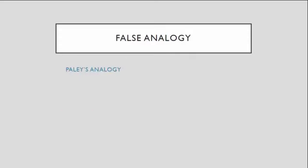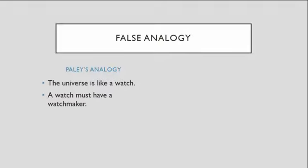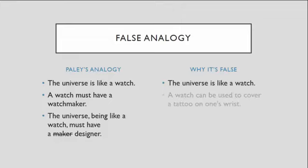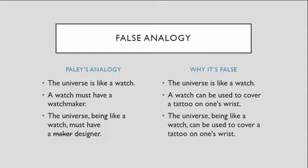One of the things we have to be careful of when we read, hear, or even write an analogy is the idea of false analogy. There's a fellow by the name of William Paley who wrote an analogy comparing the universe to a watch. He says the universe is like a watch because a watch has a watchmaker, so the universe must have a designer or a maker as well. Sounds great — but the reason it's false is because he didn't really consider all of the parts and all the workings and purposes of a watch. The universe is like a watch, but I can use a watch to cover up a tattoo on my wrist — I can't do that with the universe. So when creating or reading analogies, you want to catch those false things and be able to account for all of the parts.